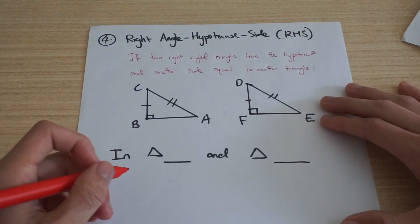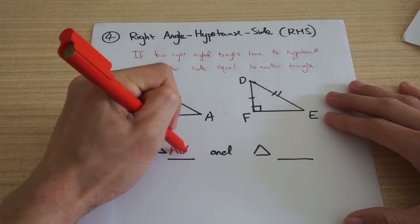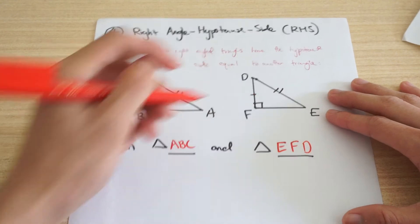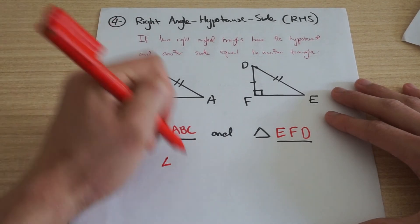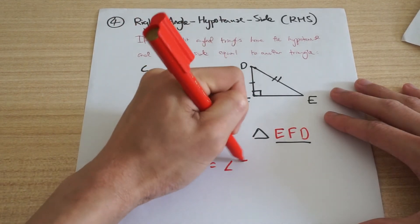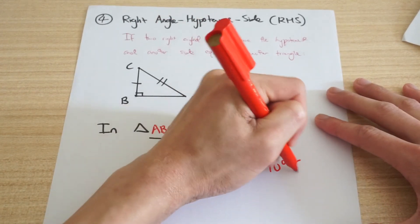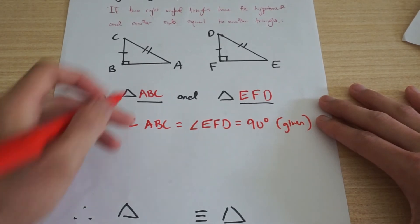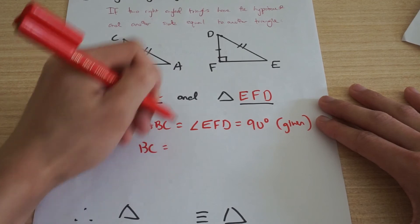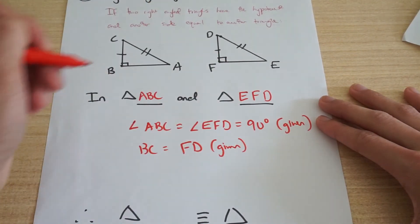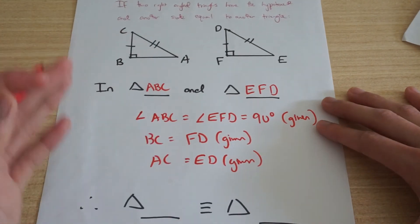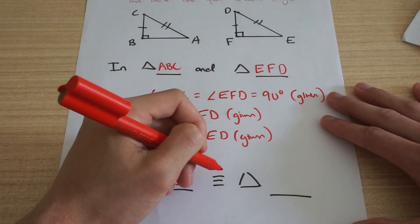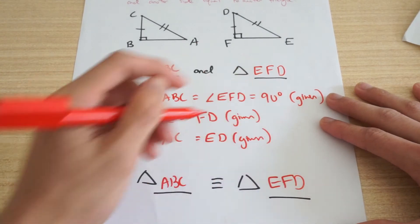So I can finish off. Triangle ABC is congruent to triangle KLM. Cool. Last but not least, our right angle hypotenuse side. So, okay, my two triangles in, I've got ABC and EFD. And then, okay, first thing I know is, I know that there's a right angle here. And I know that they're equal. So I can just refer to that. I've got angle, say, ABC equals to angle EFD equals to 90 degrees. I know that my side BC equals to FD. And lastly, I know that AC equals to ED. There's all my reasons. And finish it off. I know that triangle ABC is congruent to triangle EFD.